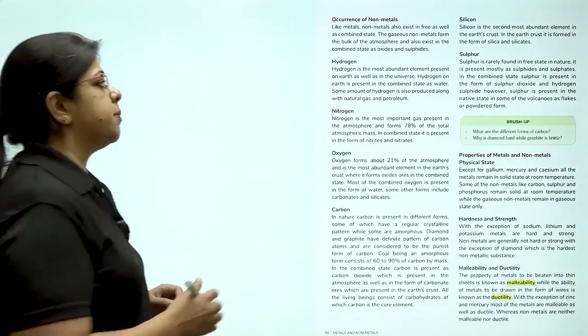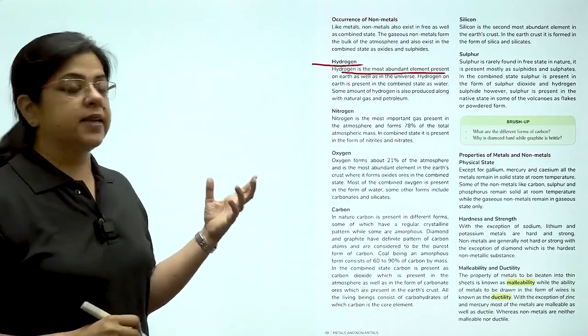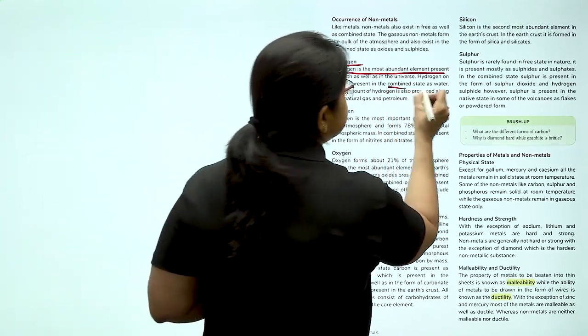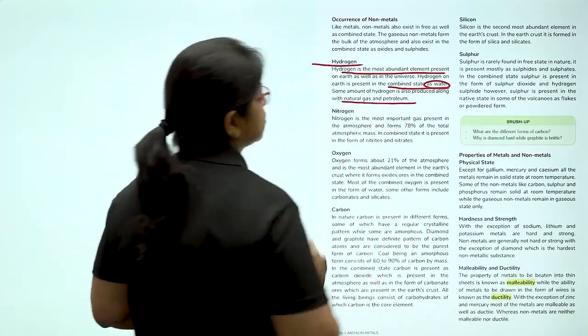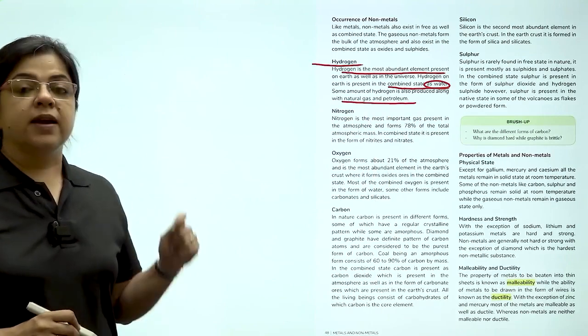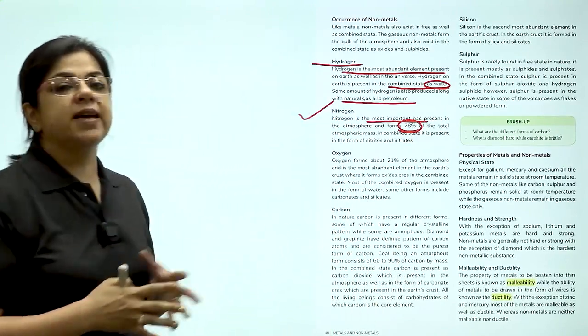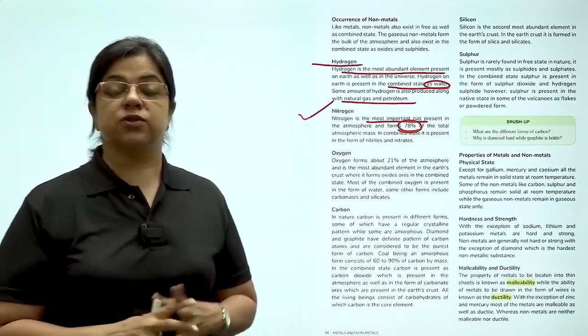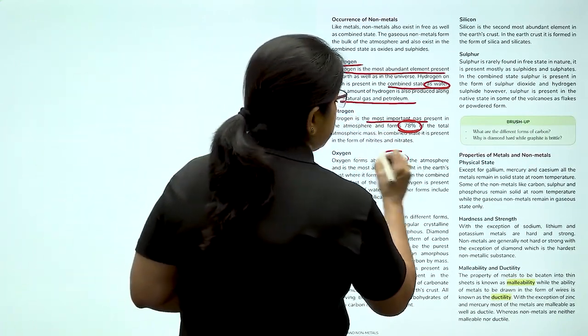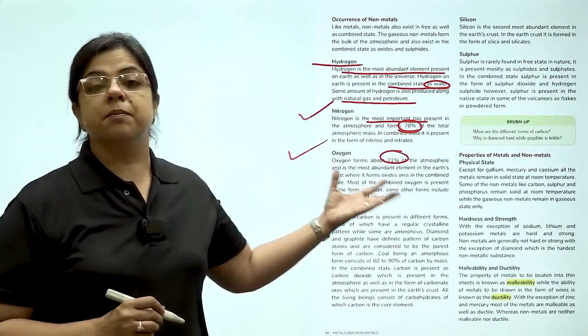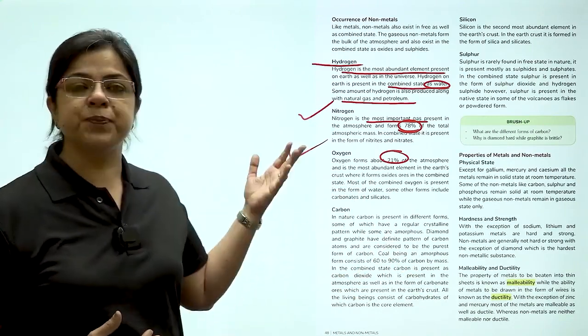Let us talk about the occurrence of non-metals. We know that hydrogen is the most abundant element present on earth and even in the universe. It is present in the combined state as water and it is also produced along with the production of natural gas and petroleum. Nitrogen is the most important gas and it forms 78% of the total atmosphere. Oxygen forms 21% of the atmosphere. It is the most abundant element on earth and oxygen is constantly produced by the process of photosynthesis.